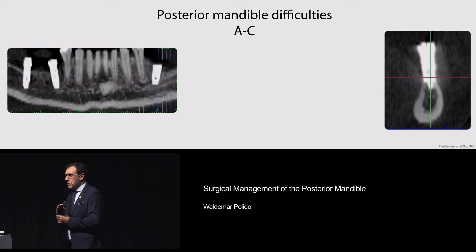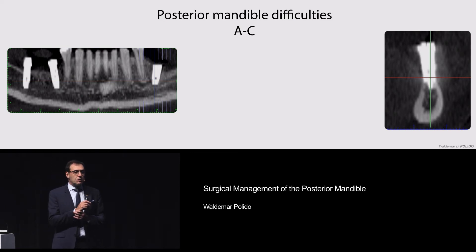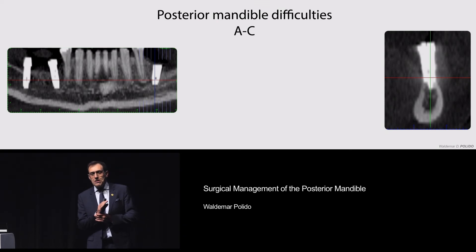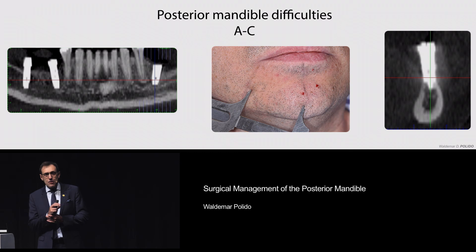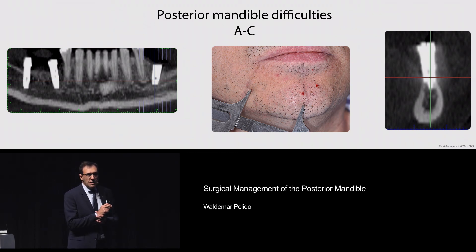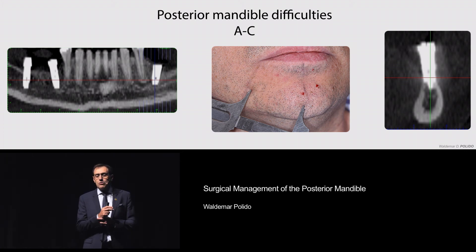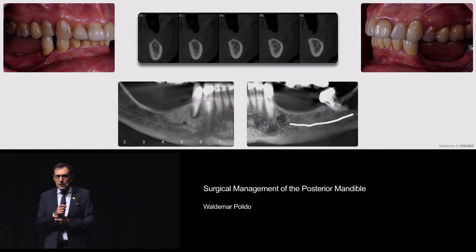But the posterior mandible can also be a very dangerous situation because there is a very important anatomic structure — the inferior alveolar canal — plus sublingual anatomical structures. Unfortunately, we still occasionally see implants going through the inferior alveolar canal, leaving the patient with permanent paresthesia, even if we remove the implant. Nowadays it's relatively easy to remove an implant, but we cause another damage to the nerve when we do so.